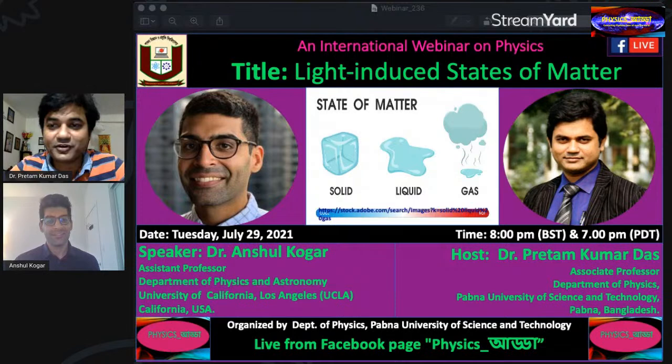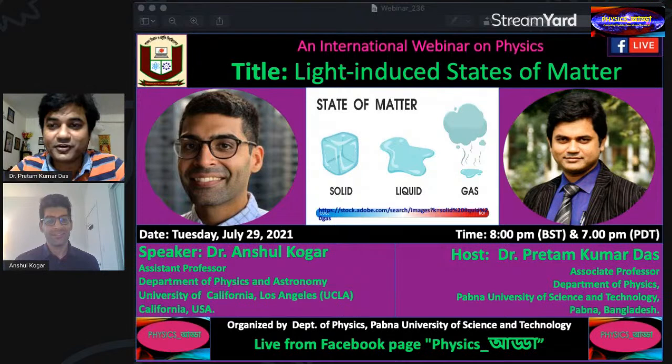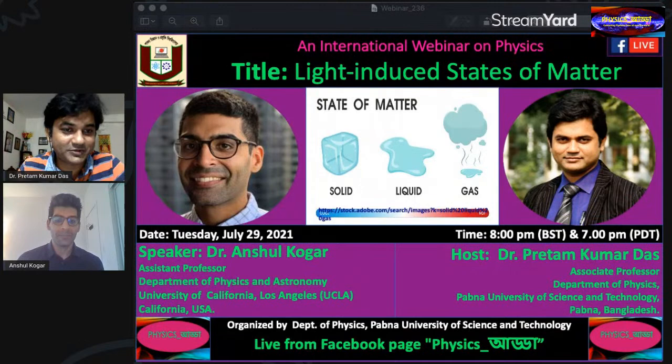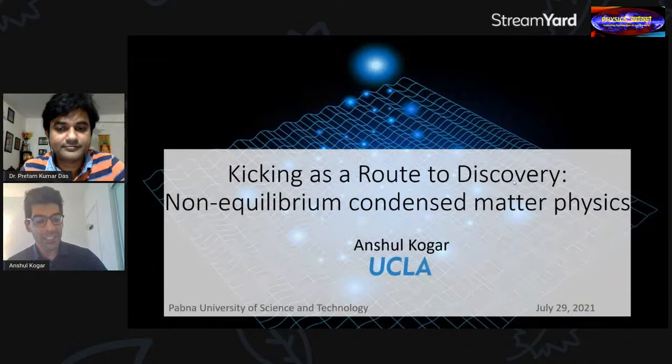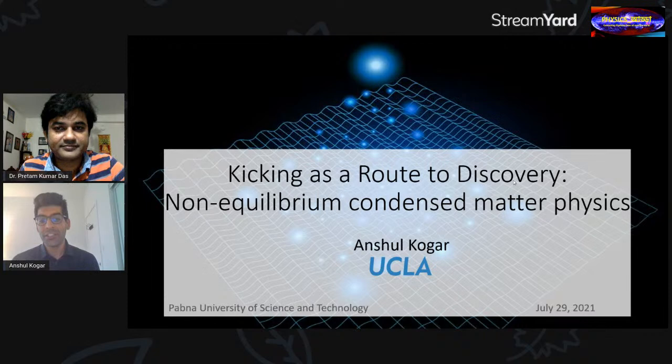From 2016 to 2019, Professor Kogar was a postdoctoral researcher in the group of Nuh Gedik at MIT, where he worked on using intense ultrafast light pulses to induce non-equilibrium states of matter. In particular, he showed using ultrafast electron diffraction that photons can be used to induce a charge density wave in lanthanum tritelluride. I think you will enjoy this session, and now it's time to go to our speaker.